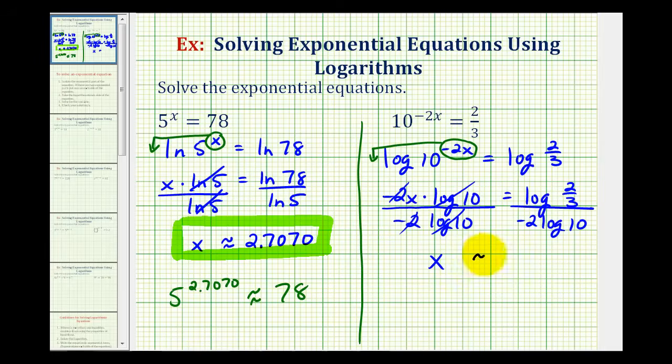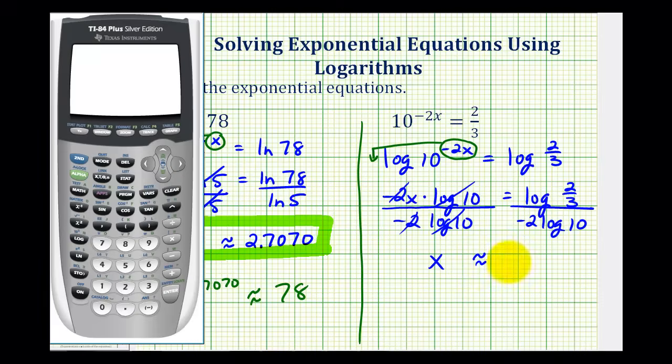So let's go back to the calculator, and now we're using the common log. We'll press log 2 thirds for the numerator, 2 divided by 3, divided by, we need an open parenthesis for the entire denominator. Negative 2, of course log 10 is 1, but I'll go ahead and type it in. So we have a closed parenthesis for the log and for the denominator, and enter. So x is approximately 0.0880.